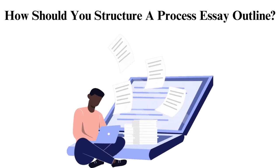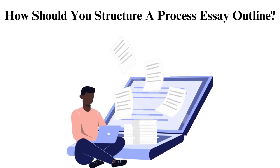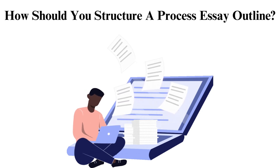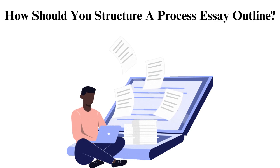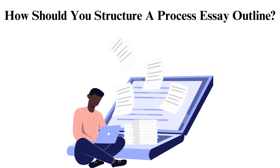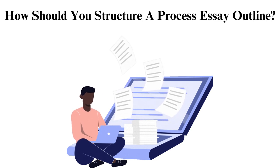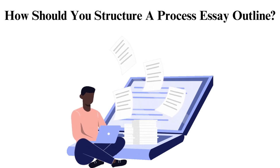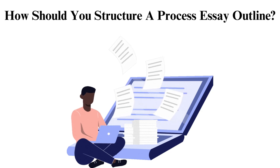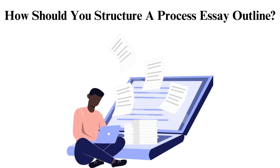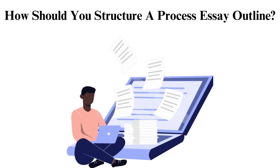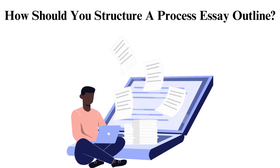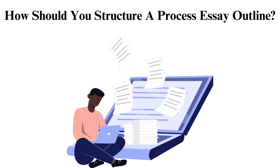How should you structure a process essay outline? An outline should have an introduction, body, and paragraphs. The introduction sets the paper's tone and helps readers understand the subject under discussion. It should have a hook — the first sentence that captures the attention of readers — background, which gives a brief introduction to the topic, and a thesis statement, the last sentence that shows the process that will be discussed.